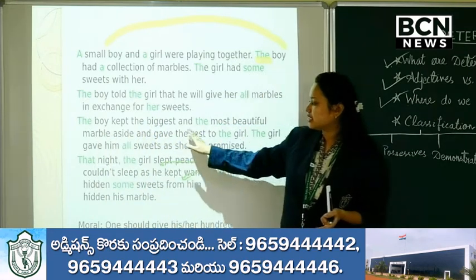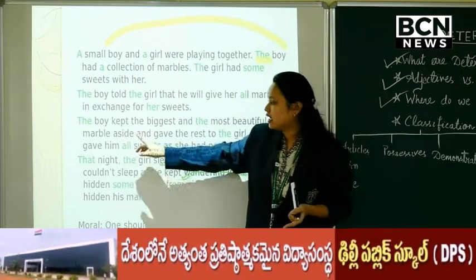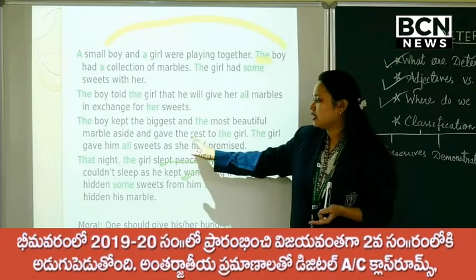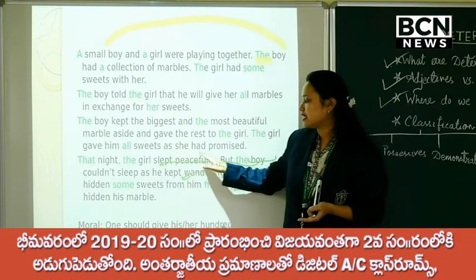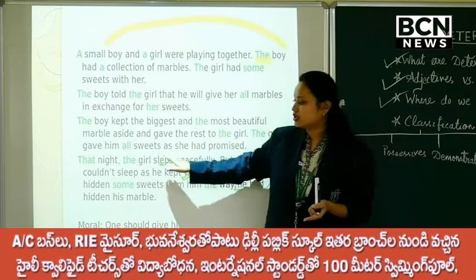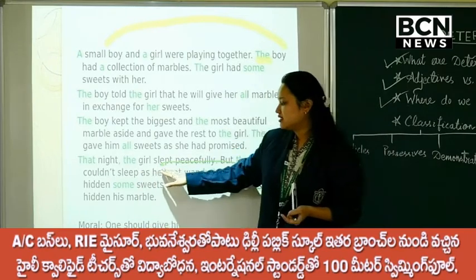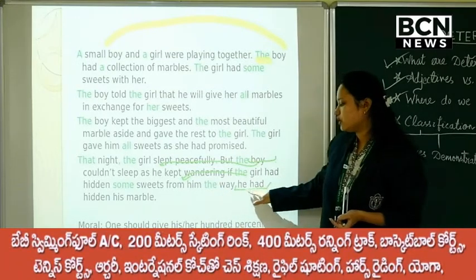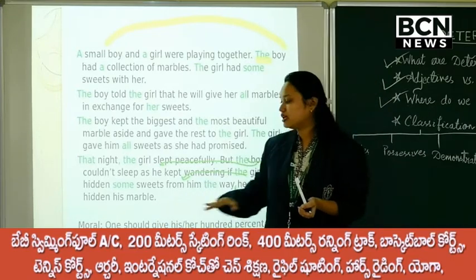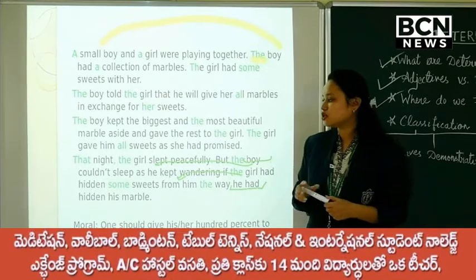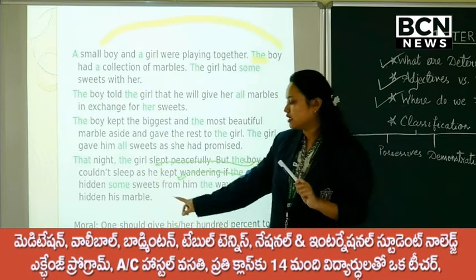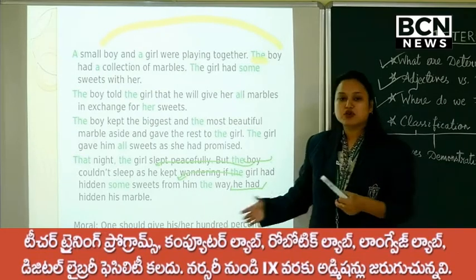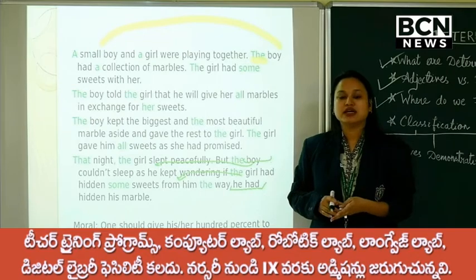The boy kept the biggest and the most beautiful marble aside and gave the rest to the girl. The girl gave him all the sweets as she had promised. That night, the girl slept peacefully, but the boy couldn't sleep — as he kept wondering if the girl had hidden some sweets from him the way he had hidden his marble. The night — one particular night. Some sweets — talking about amount. His marble — possession. The moral: we should give our hundred percent to everything and sleep peacefully.